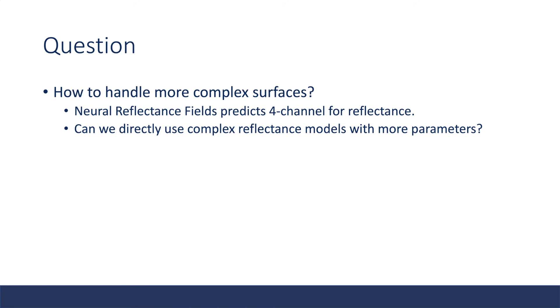Actually, in this work, we are solving a challenging ill-posed inverse problem. Neural reflectance field is using a constrained lighting condition to reduce the solution space to make this problem not that ill-posed. If we want to use a more complex reflectance model, we also need to have the corresponding information so we can constrain this ill-posedness and get the accurate or correct result to handle these more challenging complex effects.